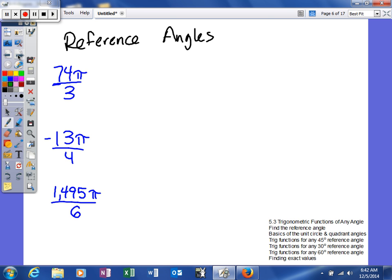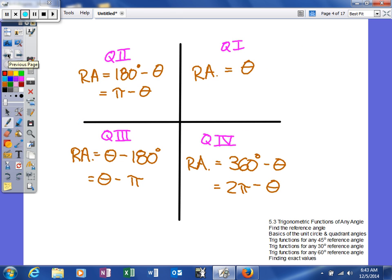But what I'm gonna tell you right now is a little bit of a help. If your denominators, if your denominators are 3, 4, and 6, reference angles for radians is pretty easy. If they're not 3, 4, 6, then you actually have to use the rules that I showed you on the other page about how to calculate your reference angle.